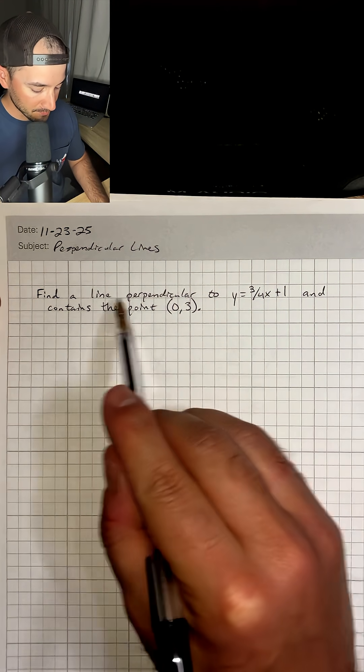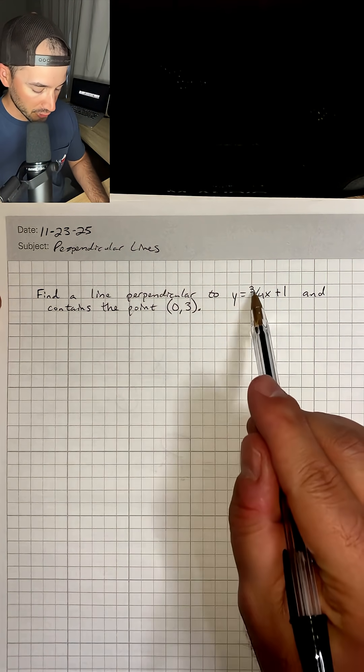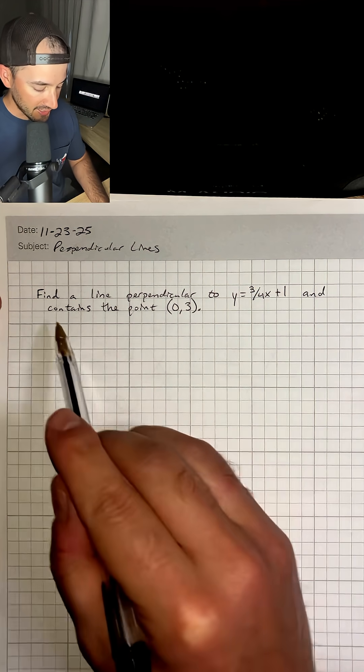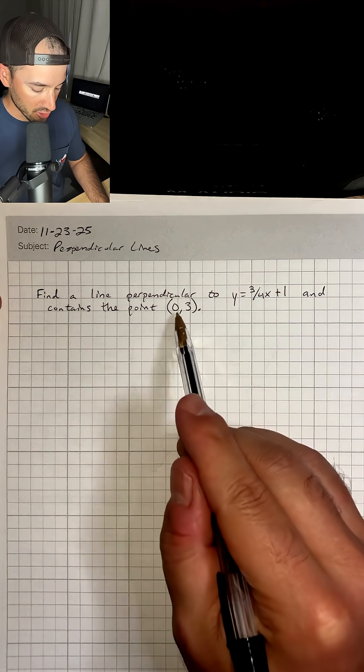If you're taking Algebra 1 this year and you don't know how to find the equation of a perpendicular line, don't worry, I got you. This problem says find a line perpendicular to y equals 3/4x plus 1 and contains the point (0,3).